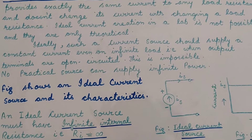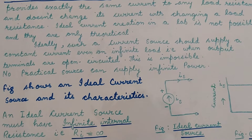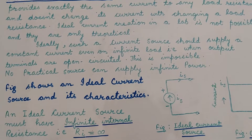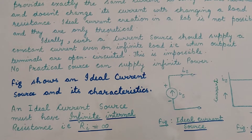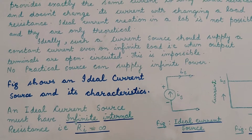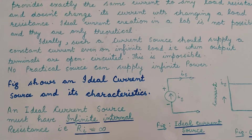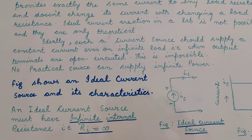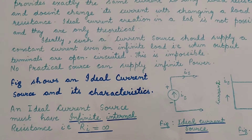Ideally, such a current source should supply a constant current even when the value of the load is infinite, and this is only possible when the output terminals are open circuited. So we find that this is impossible and there is no such practical source which can supply infinite power. So this is only a theoretical concept.